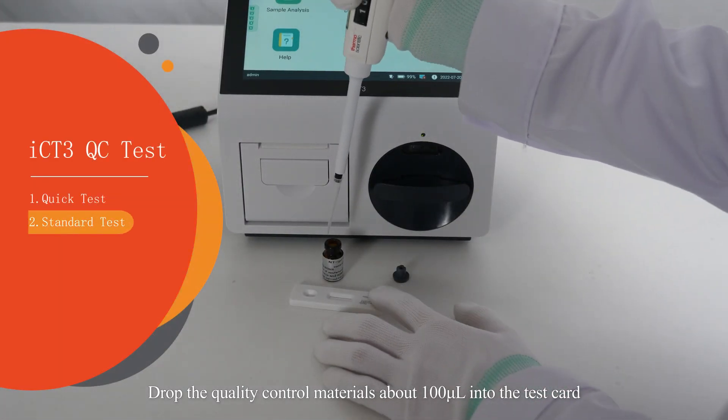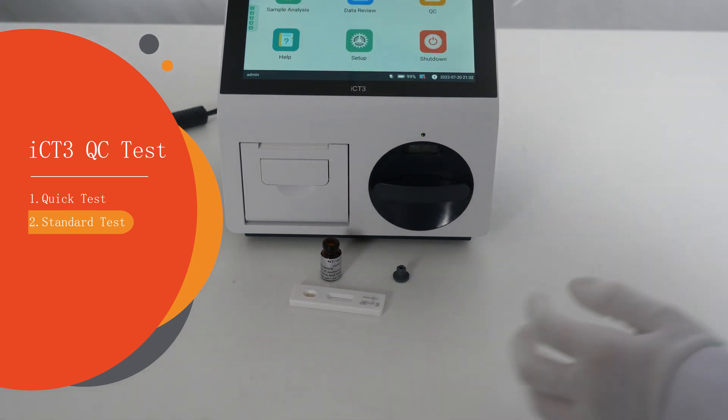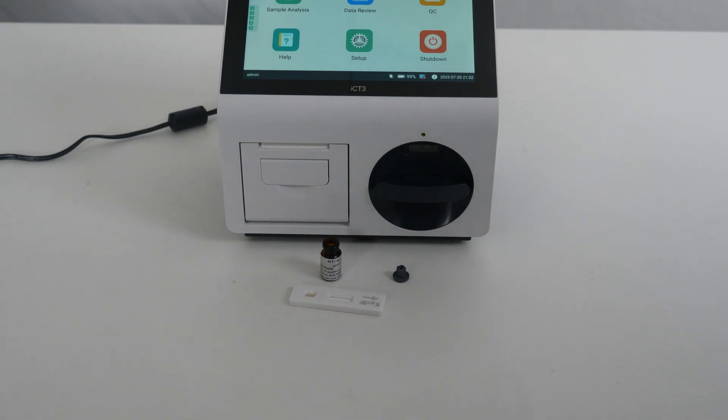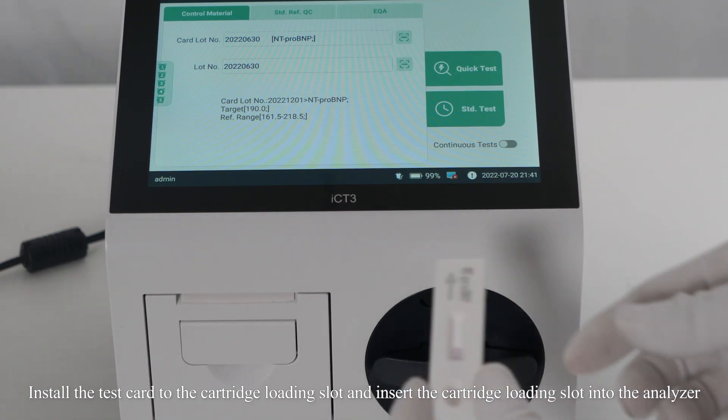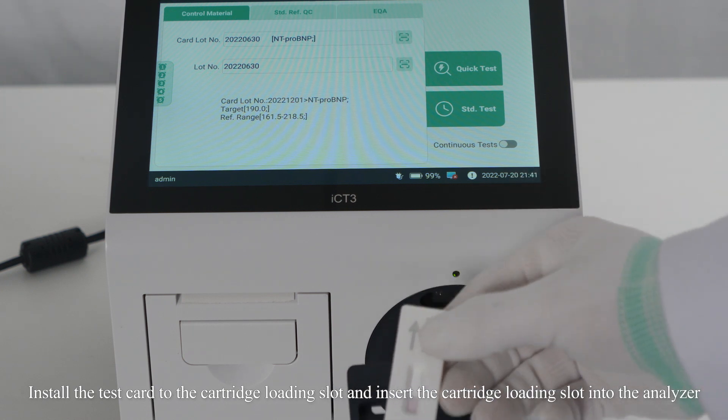Drop the quality control materials about 100 microliters into the test card. Install the test card to the cartridge loading slot and insert the cartridge loading slot into the analyzer.